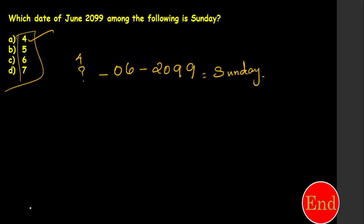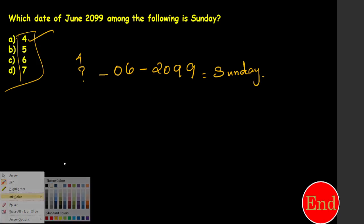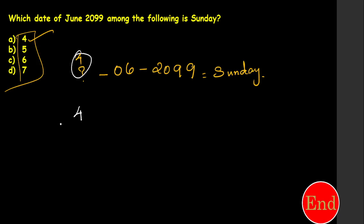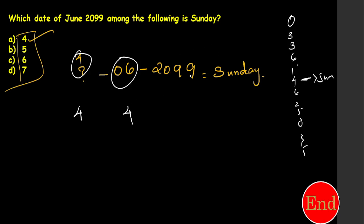For the month code: the 12-month codes are 0, 3, 3, 6, 1, 4, 6, 2, 5, 0, 3, 5. For the 6th month (June), the code is 4. For the century: 20th century code is 6. Now I need to find odd days for the year part 99.